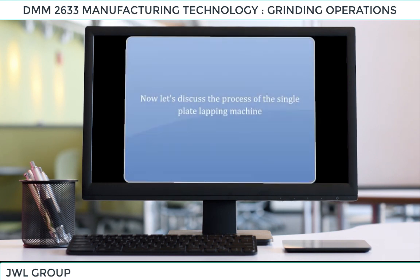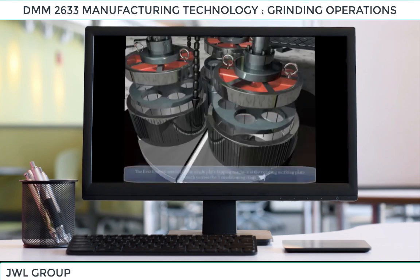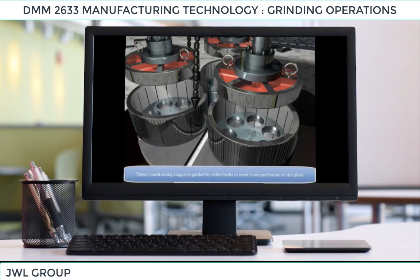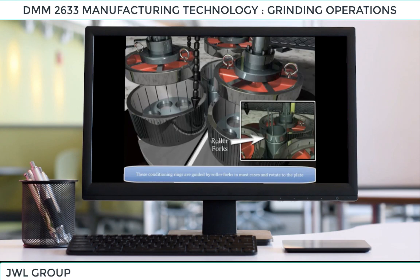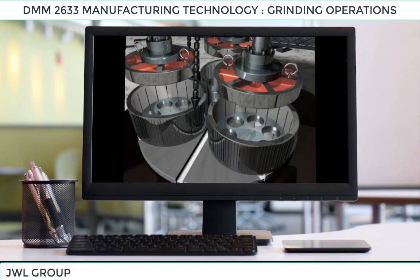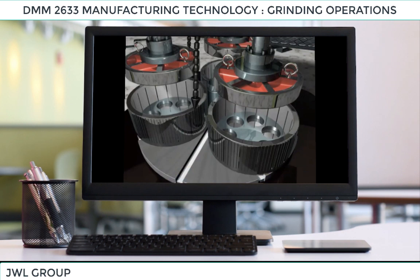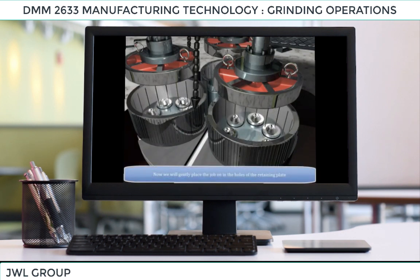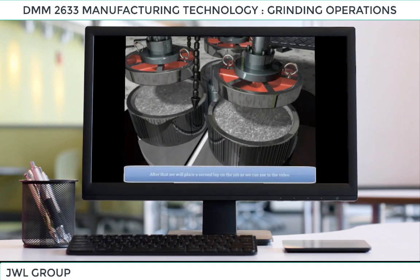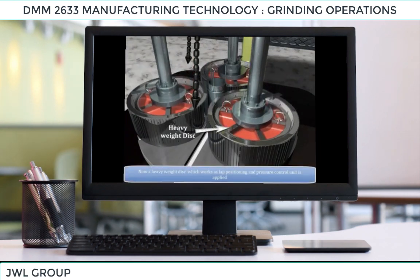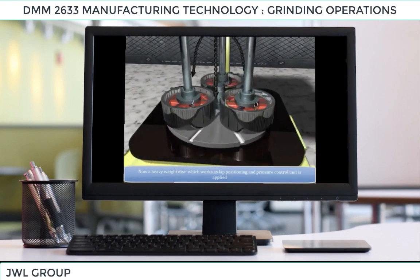In the single plate lapping machine, the first feature is the rotating working plate which carries three conditioning rings. These conditioning rings are guided by roller forks and rotate relative to the plate. The conditioning rings contain a flat plate with suitable holes which retain the job on the lapping plates. The job is gently placed in the holes of the retaining plate, a second lap is placed on the job, and a heavy weight disk serving as lap, positioning, and pressure control unit is applied.